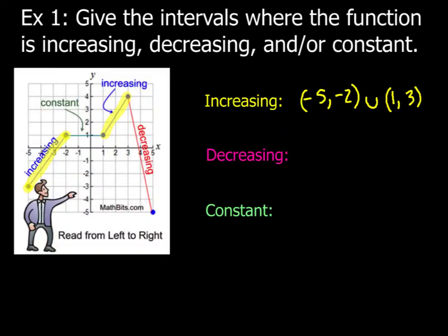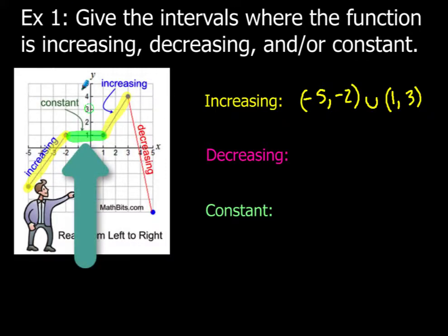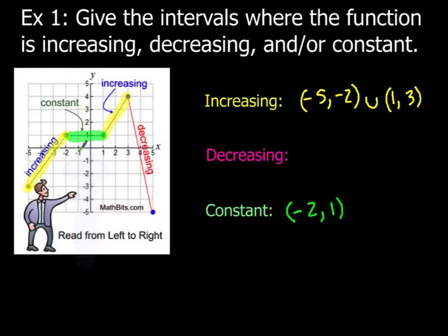Next, I'm going to take a look at this piece in the middle. That's where my function has a flat line or a zero slope, and any time we have a zero slope, that's where the function is constant. And that's going to go from negative 2 all the way to 1 along the x-axis, so my function will be described as being constant.